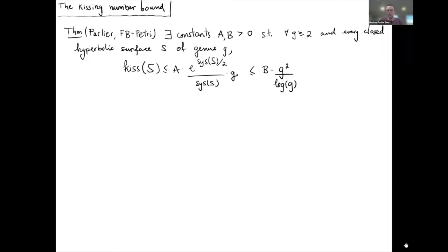The result we proved for the kissing number — originally due to Hugo Parlier — says that the kissing number can be bounded by a function of the systole and the genus, which in turn can be bounded by a constant times g² divided by log g. Parlier's proof is very geometric and direct, whereas our proof is based on the Selberg trace formula. Our proof is easier but relies on this deep tool, and the advantage is that it easily generalizes to higher dimensions.